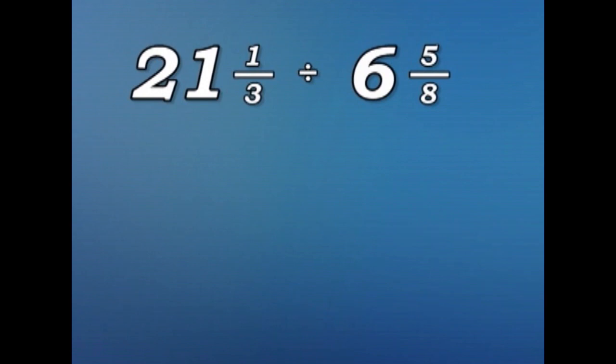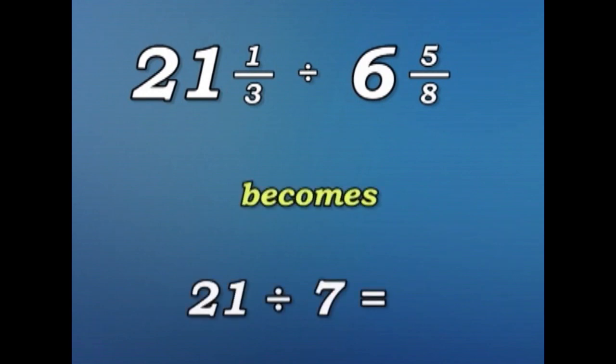Let's have a look at another one. 21 and one third divided by six and five eighths becomes 21 divided by seven, which is three. Let's check it out.